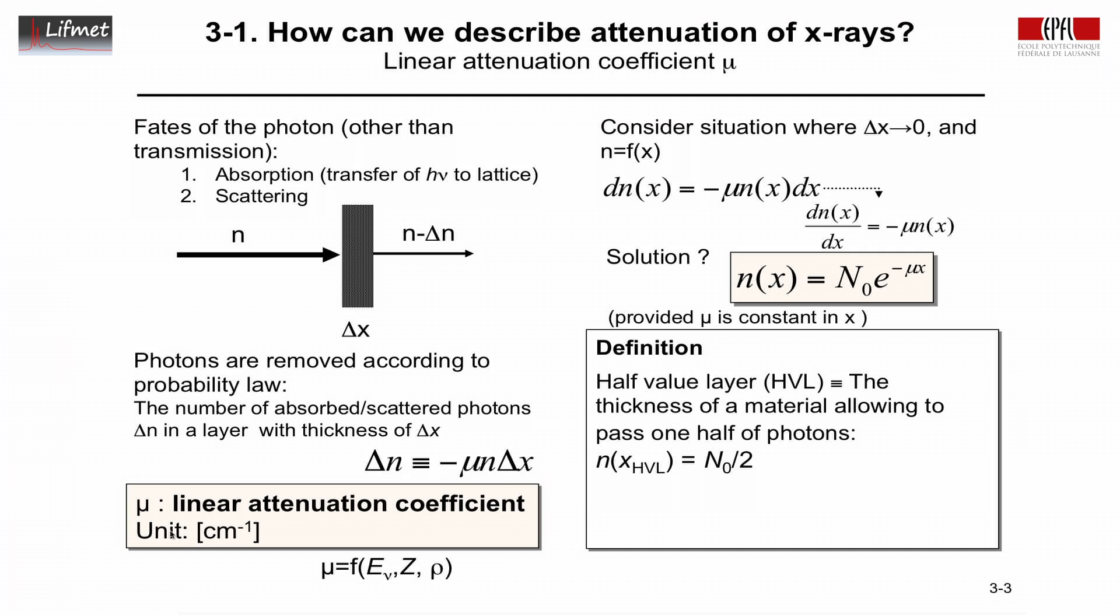Now, the linear attenuation coefficient, as I mentioned here, is given in 1 over centimeters, and that's a unit that's not very intuitive. And so we use very often the half-value layer to describe the attenuation of a tissue. And the half-value layer is essentially defined as a thickness of material that passes one half of the photons. So, the number of photons at x equals to the half-value layer thickness, x HVL, is equal to the incident photons n₀ divided by 2.